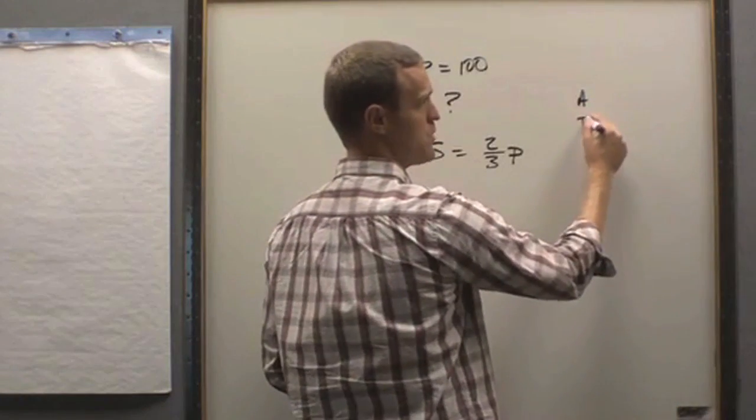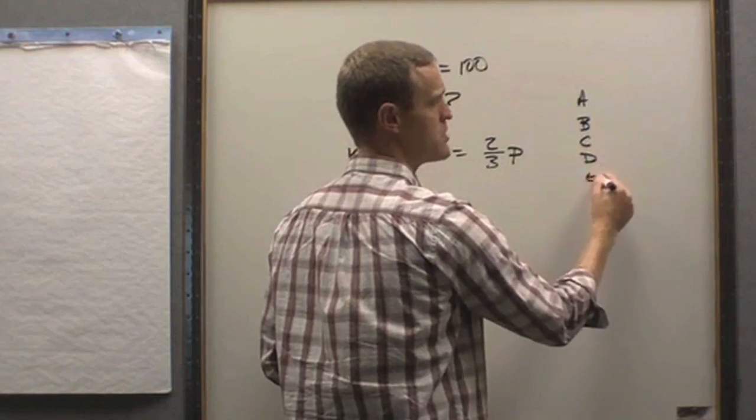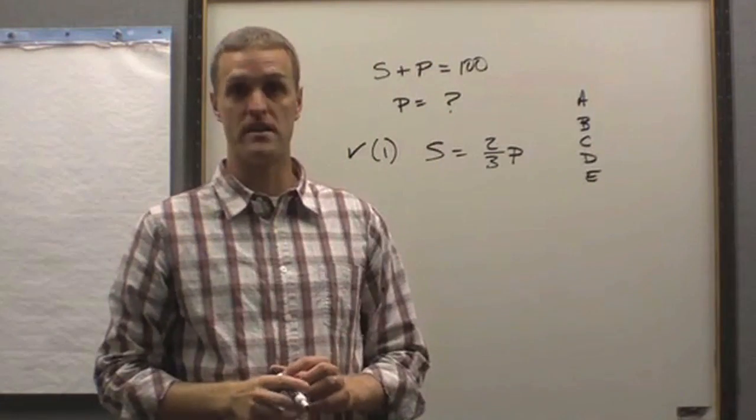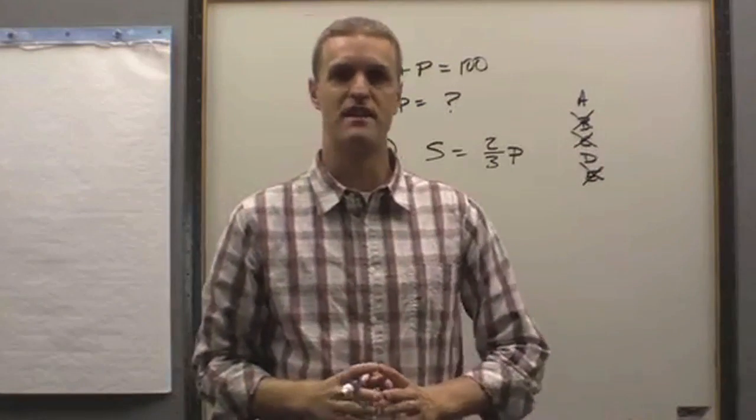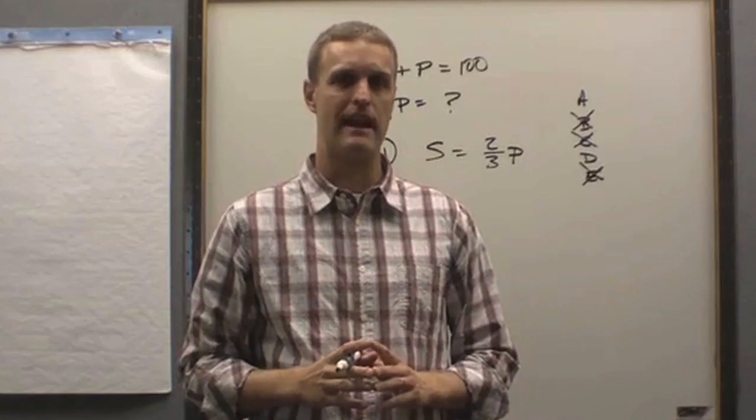And then, of course, you can go over to your answer choices. And once you've made the determination that statement one is sufficient, we can eliminate B, C, and E as per our rules of data sufficiency eliminating answer choices.